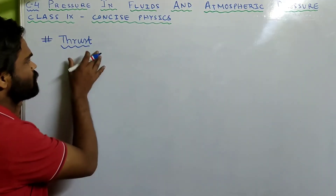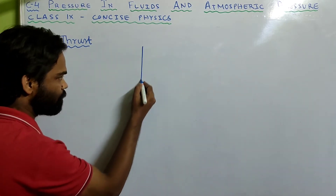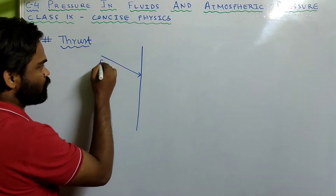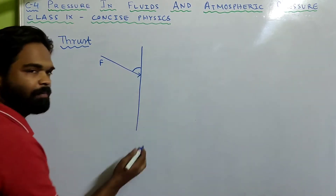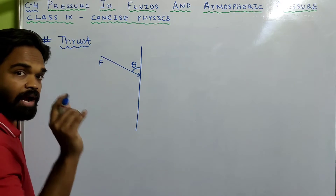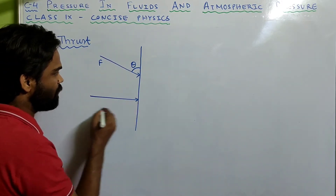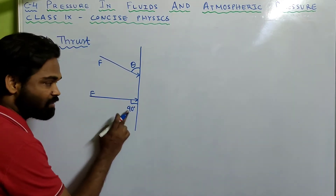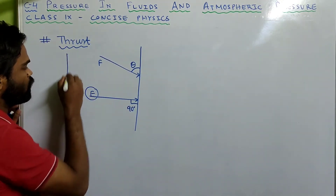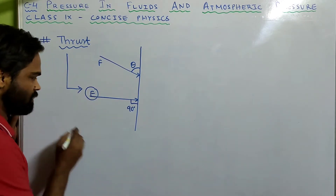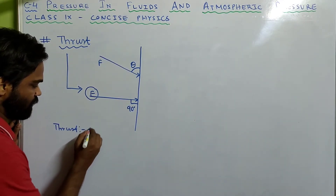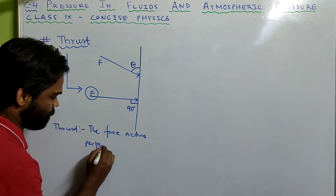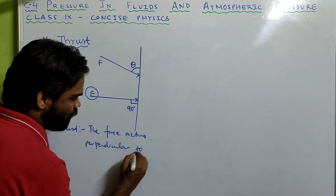Now, thrust. To understand thrust: suppose there is a surface and you put a force on it. You can put a force in any direction — suppose F. The angle which the surface makes with the force applied is theta. If you put a force on the surface such that the angle is 90 degrees, when the force acts perpendicular to the surface, then this force is known as thrust.